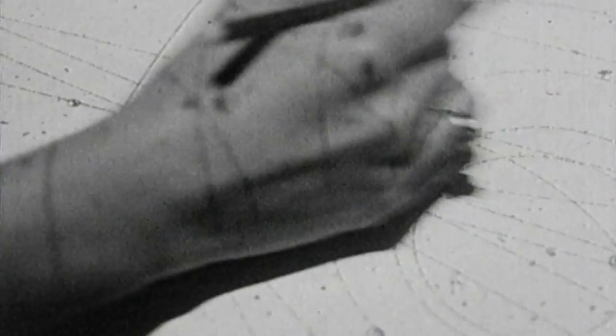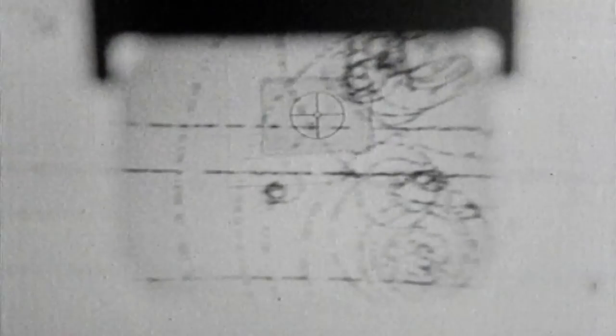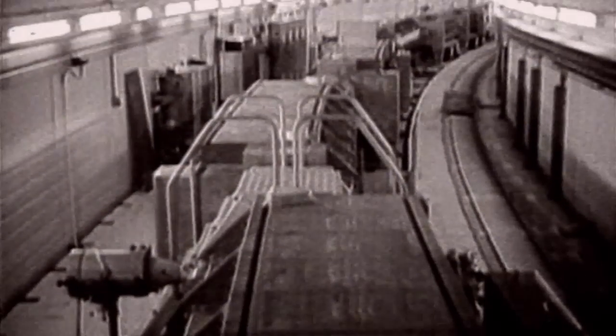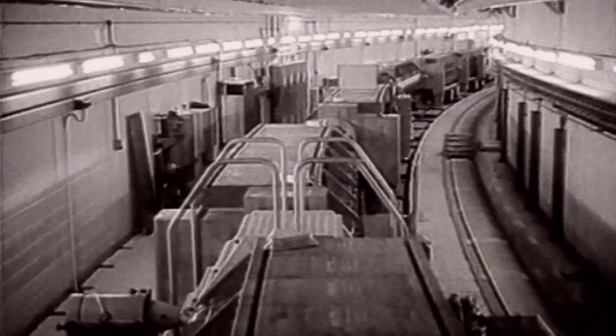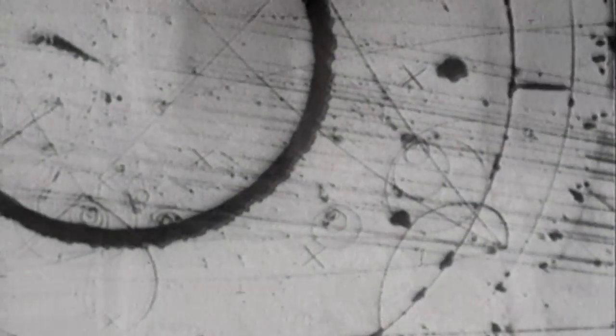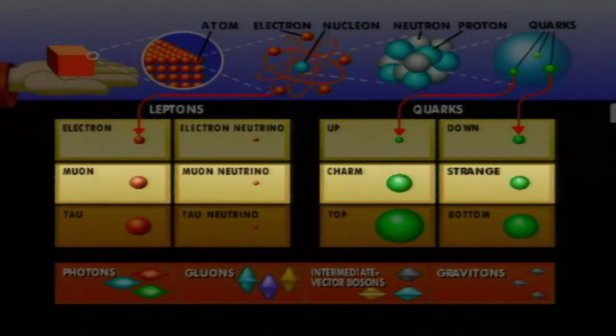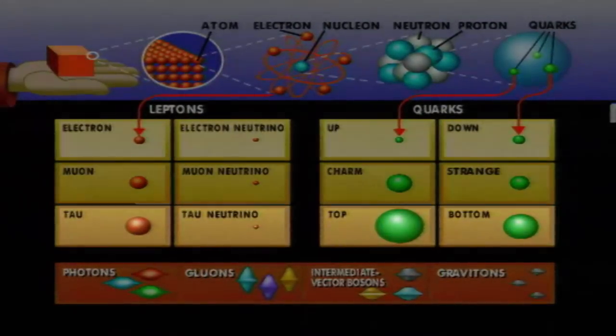In the 1950s and 60s, scientists were able to work with increasingly more powerful accelerators. New particles were discovered almost daily: muons, pions, neutrinos, sigmas. The simple pattern of matter conceived in the 1930s suddenly exploded into something much more difficult to grasp, or so it seemed.